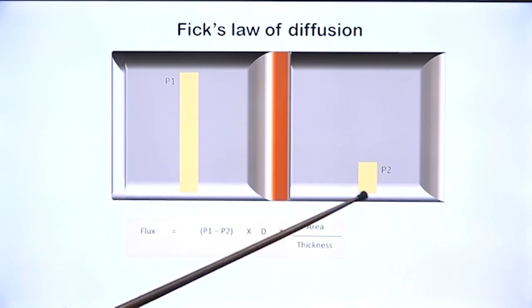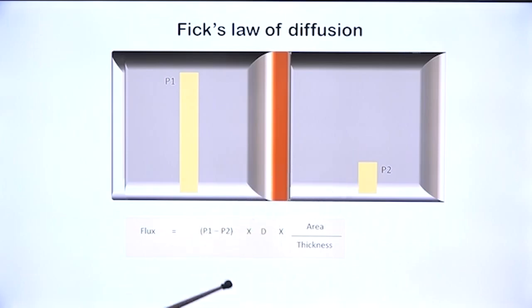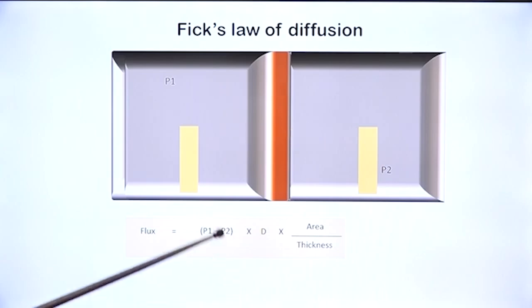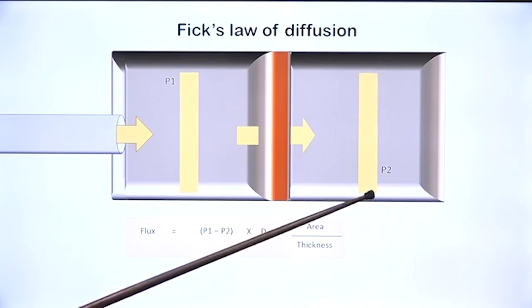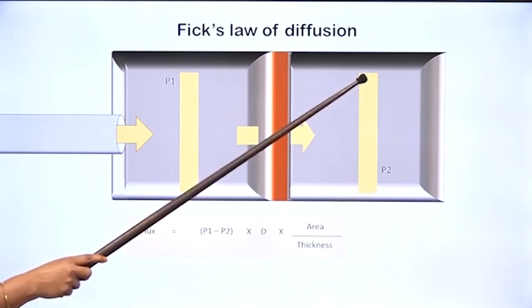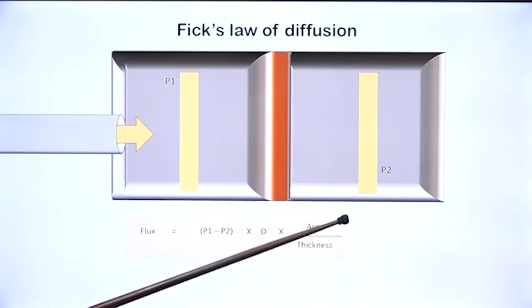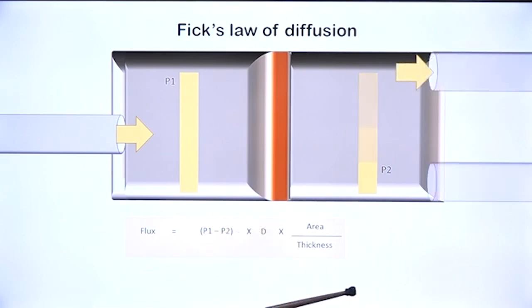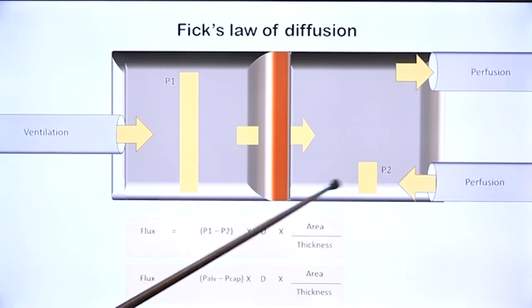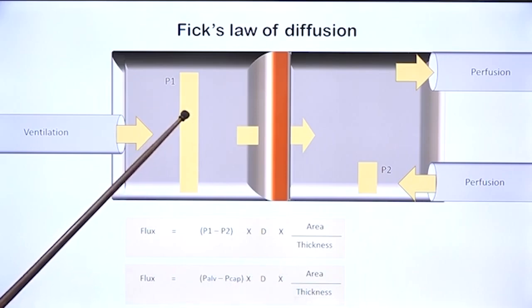These are the partial pressures of oxygen on either side. If diffusion occurs, pressures on either side will equalize and diffusion will stop. For diffusion to continue, P1 must be maintained at a higher level — that happens with ventilation, bringing fresh atmospheric air into the alveolus. Likewise, capillary oxygen must not rise too high; diffusion will stop if capillary oxygen reaches alveolar oxygen. Perfusion keeps P2 at a low level. Only if ventilation and perfusion are normal can P1 be maintained high and P2 low, allowing diffusion to continue throughout.